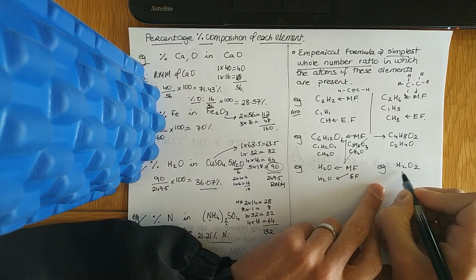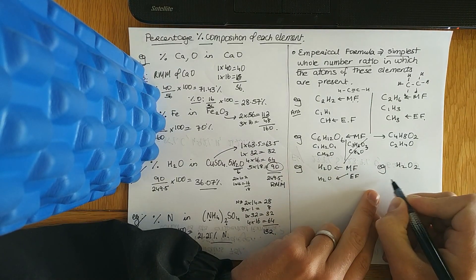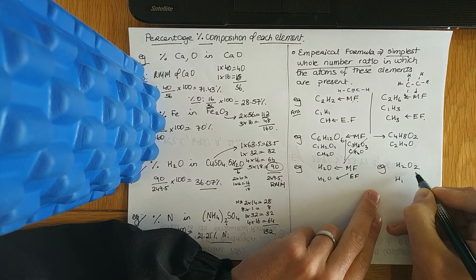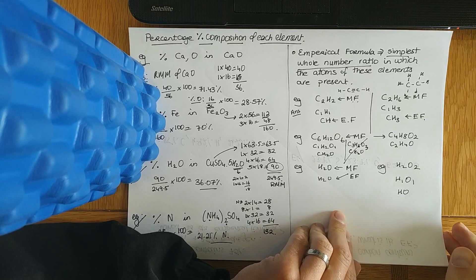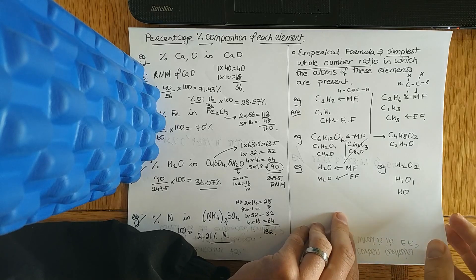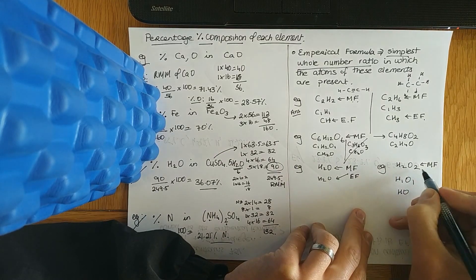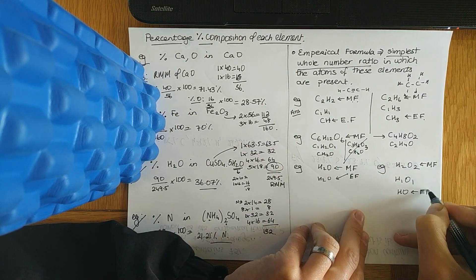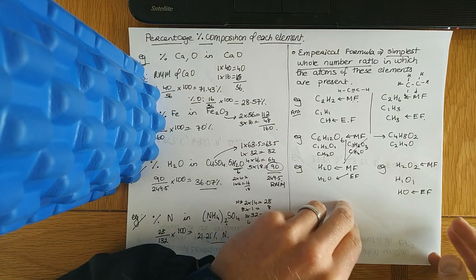Last one: hydrogen peroxide, H₂O₂. The common factor is 2: 2 into 2 goes once for both. So the molecular formula is H₂O₂, indicating the actual number of atoms present, and the empirical formula is HO — the simplest whole number ratio.